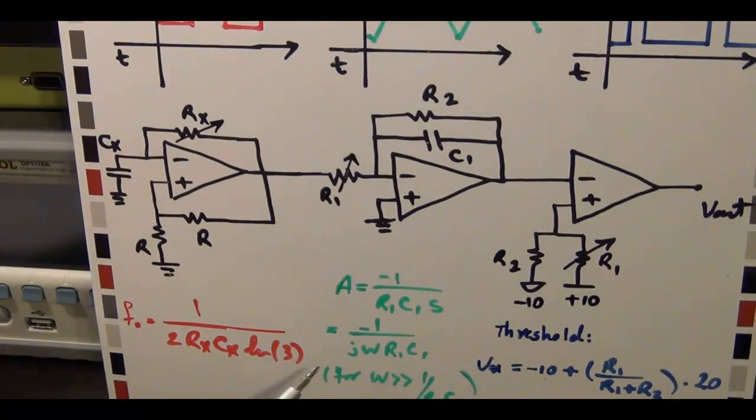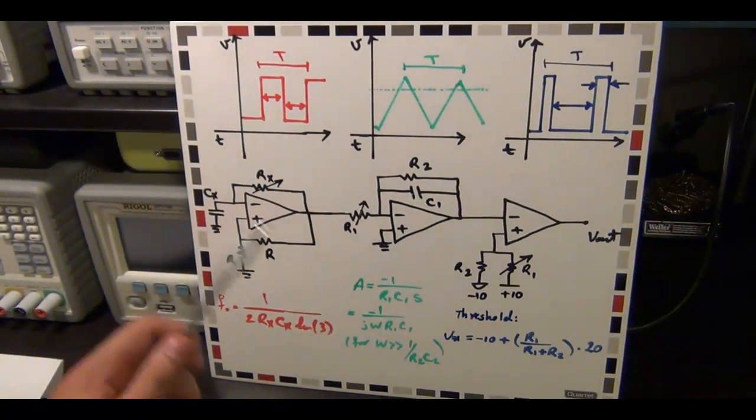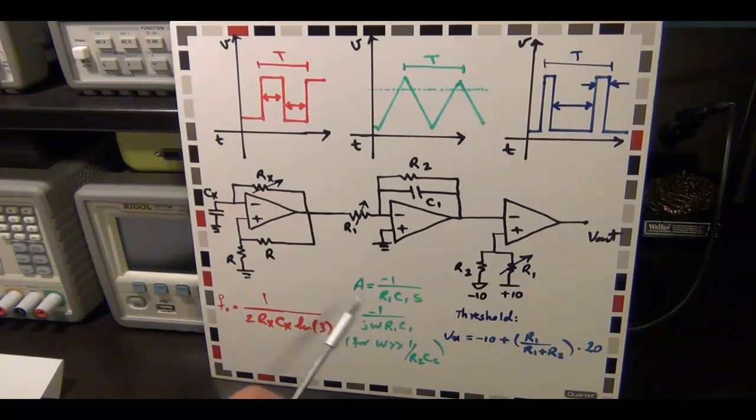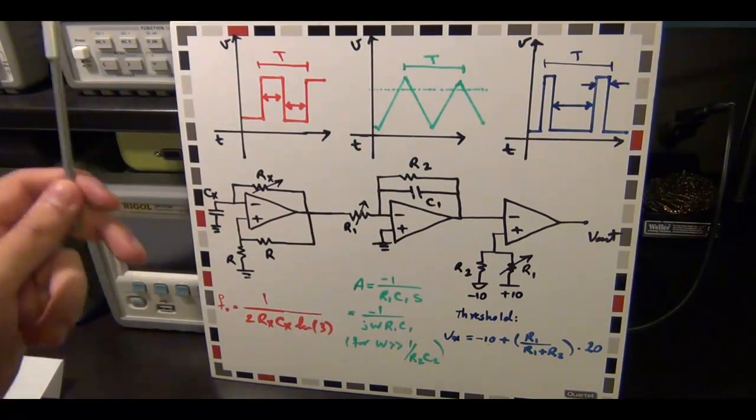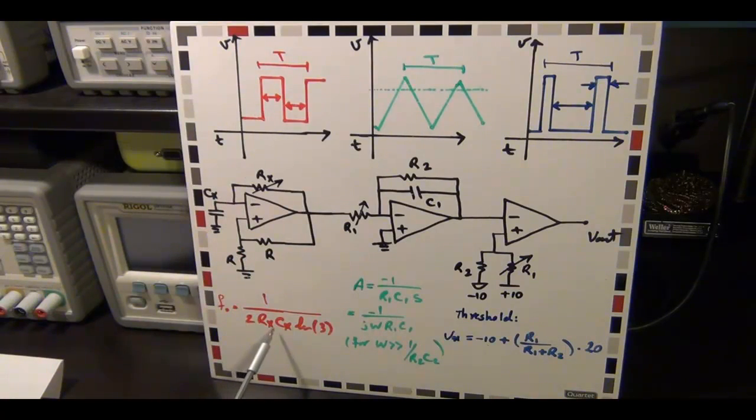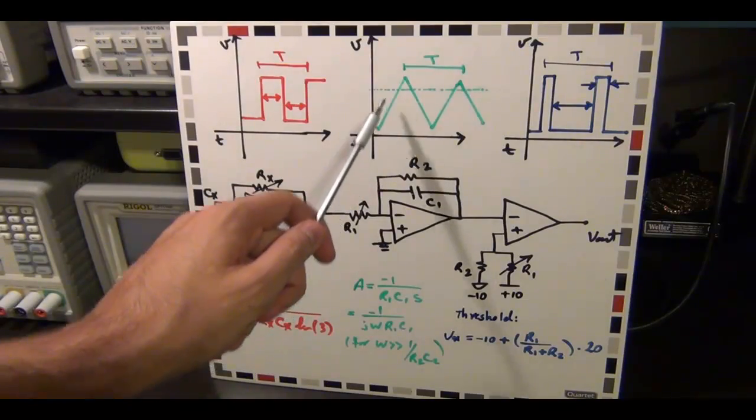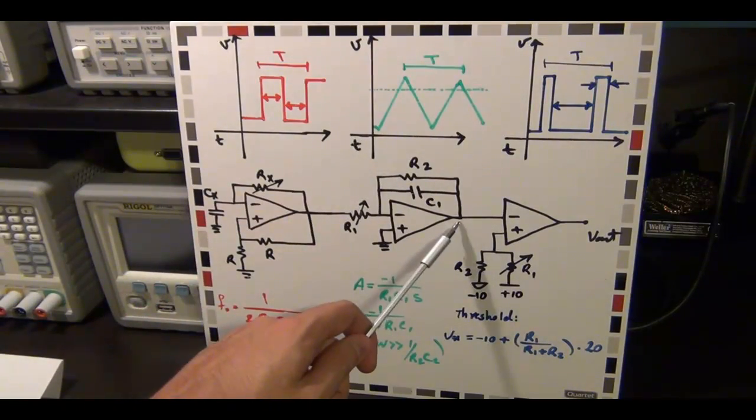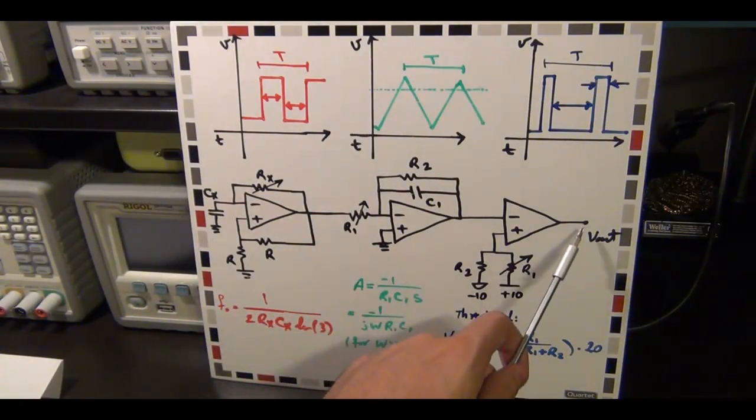So what I want to do is I want to build all these three circuits in a row, put them on a breadboard, and then we can measure the output of the first one, see if it looks like that, and if it is indeed equal to this, if we can calculate and set the frequency based on this equation. Then we will make an integrator as a second stage, and then we will measure it, see if in fact we are getting a triangular wave by the output here.